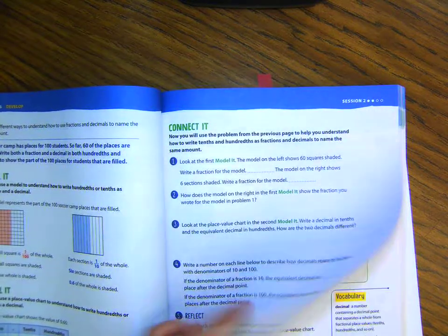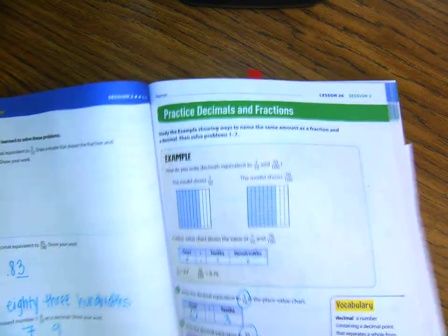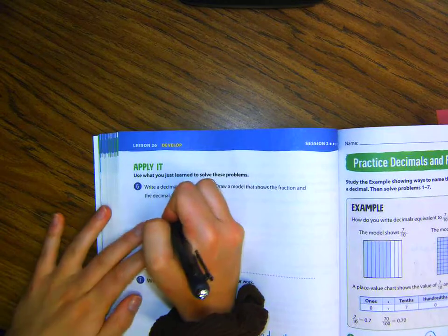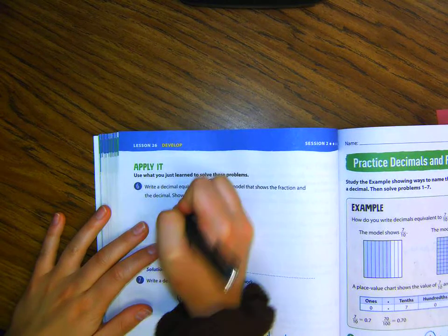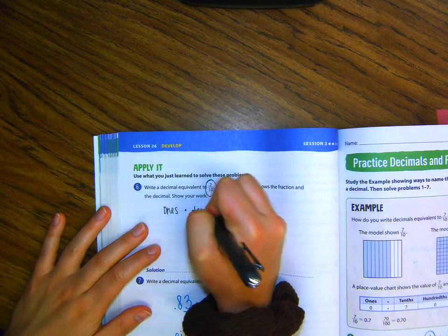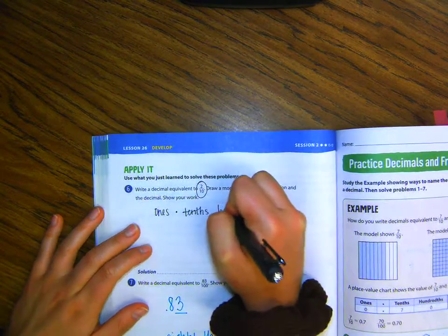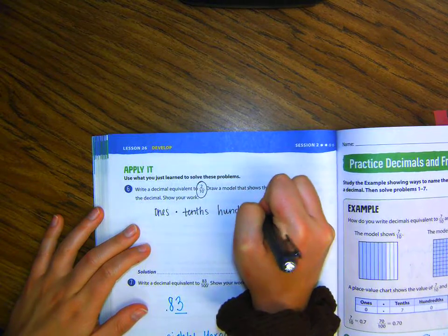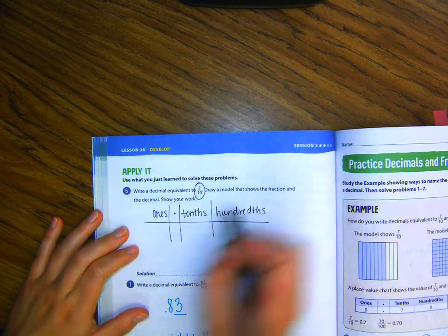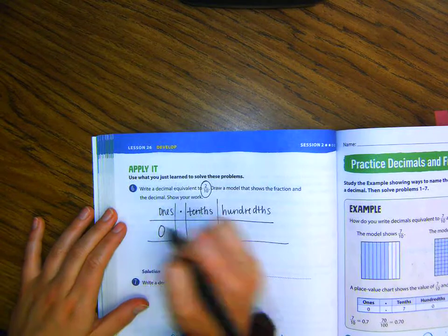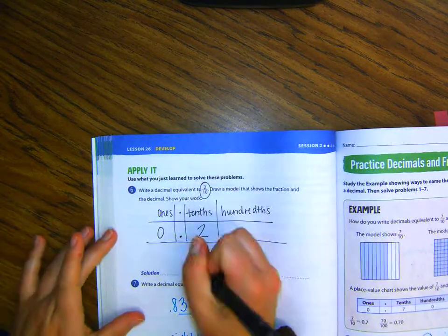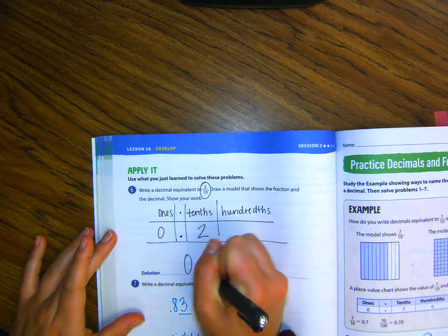Let's look at number six on page 542. It says, write a decimal equivalent to two tenths. So, I could do two tenths. So, if I have my ones, my decimal, my tenths, and my hundredths. Okay, so that means I don't have one whole. I have a decimal, and then I'm in tenths, so I only have two tenths, and there's no hundredths. So, my decimal would be zero point two.